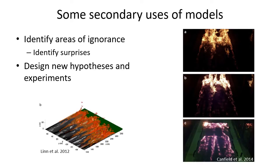Related to synthesis, there are a few secondary uses of models. Sometimes they can help us identify areas we don't understand - maybe we don't know physically why a system is behaving in a particular way. They might give us a surprising result, and they can also help design new hypotheses and experiments that we can go out in the real world and test - to see if the behavior we're identifying in the model is actually occurring in our real-world system.